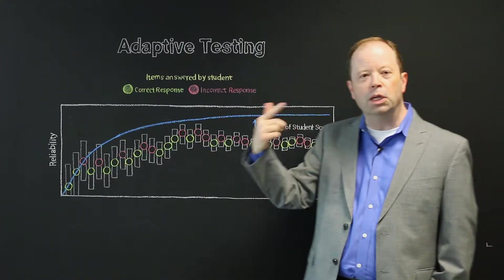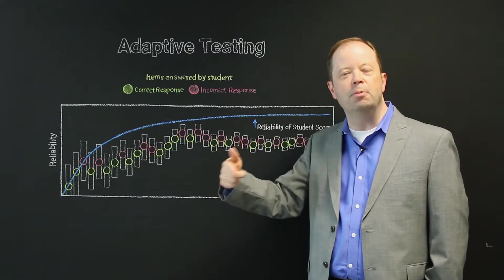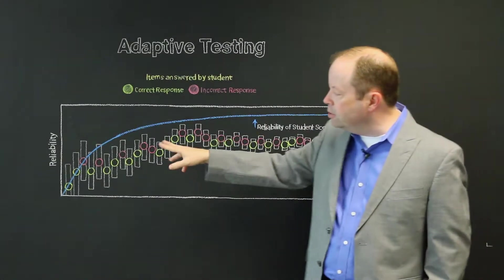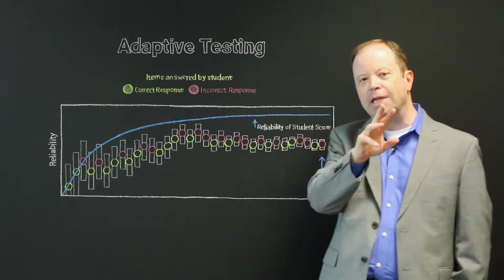Another major idea is reflected by the blue line that you see here, which is the reliability of the score. How much faith can you have in the overall score that is produced? And what you notice about this, and this is inherent not just to Star, but to any computer adaptive test,